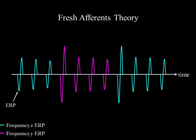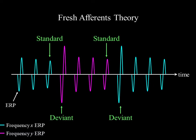Here we have ERP responses to two different frequency sounds. The last stimulus of the same frequency can be considered like the standard, and the first different frequency stimulus the deviant. The fresh afference theory suggests that mismatch negativity can be explained by differences in the responsiveness of auditory neurons that react to these different frequency stimuli. This causes the ERP to a repeated stimulus to become smaller as these neurons get fatigued — also known as adaptation or repetition suppression — which was incorporated into the deviance detection theory after it was proposed.